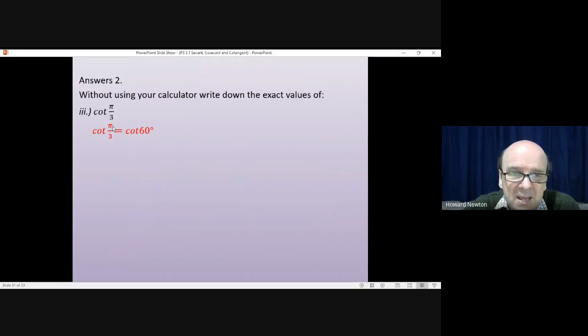Cotangent of pi by 3. Well, pi by 3 is 180 divided by 3. 180 divided by 3 is 60 degrees. Cotangent of 60 degrees will be 1 over the tangent of 60 degrees. Tan 60 is one of the standard values you're supposed to learn. Tan of 60 is root 3. So 1 over it is just 1 over root 3.